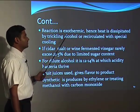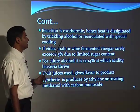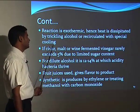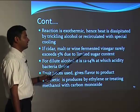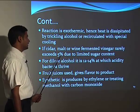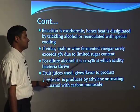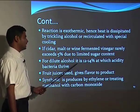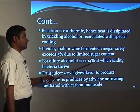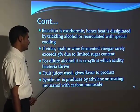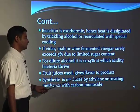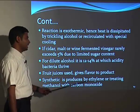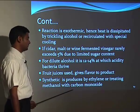The acetic acid production reaction is exothermic; heat is dissipated by trickling alcohol or by recirculated cooling. If cider, malt, or wine is fermented, vinegar rarely exceeds 5 percent acetic acid due to the limited sugar content in the raw material. For dilute alcohol, acidity bacteria thrive at concentrations of 12 to 40 percent. Fruit used as raw material gives flavor to the product; synthetics are produced by treating ethylene or methanol with carbon monoxide.